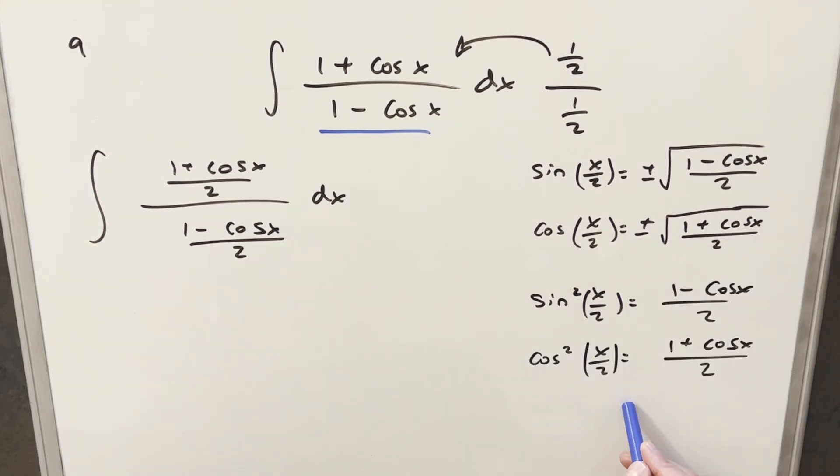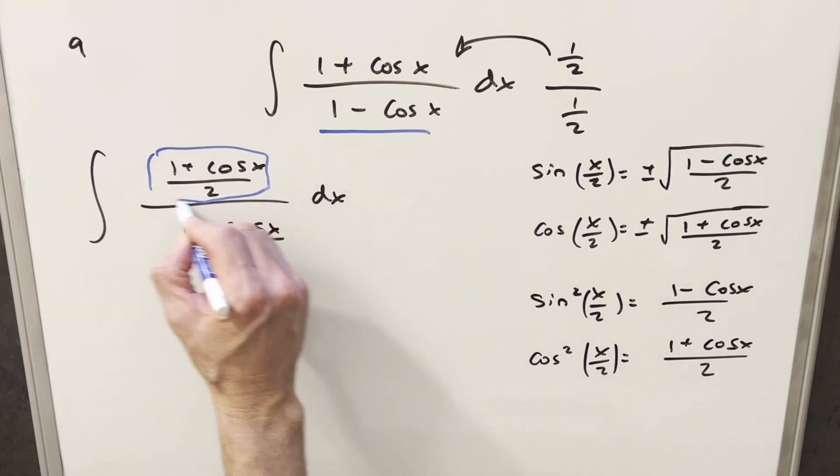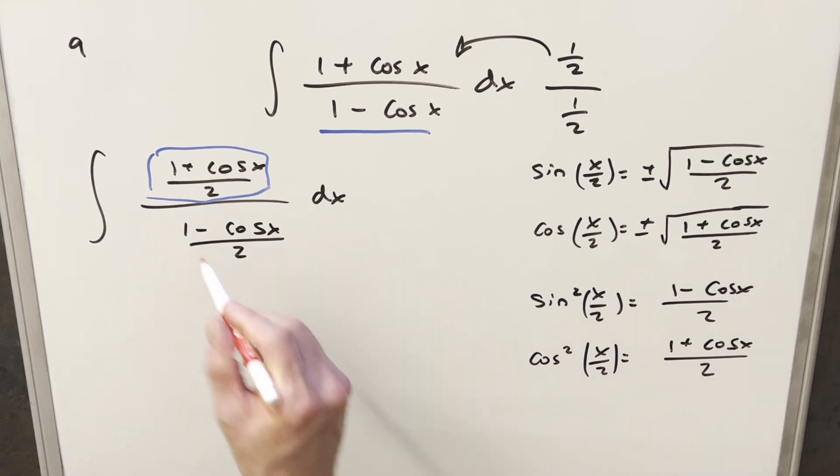But now doing it this way, this is pretty convenient because what we have here in the numerator is actually this formula for cosine squared x over 2. And then what we have in the denominator, 1 minus cosine x over 2, is actually our sine squared.